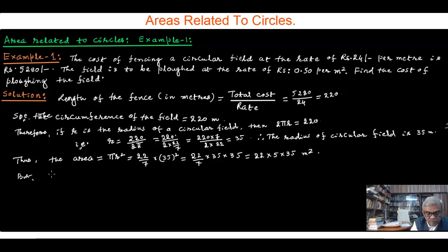The cost of ploughing one square meter equals 0.50 rupees, which is 50 paise.